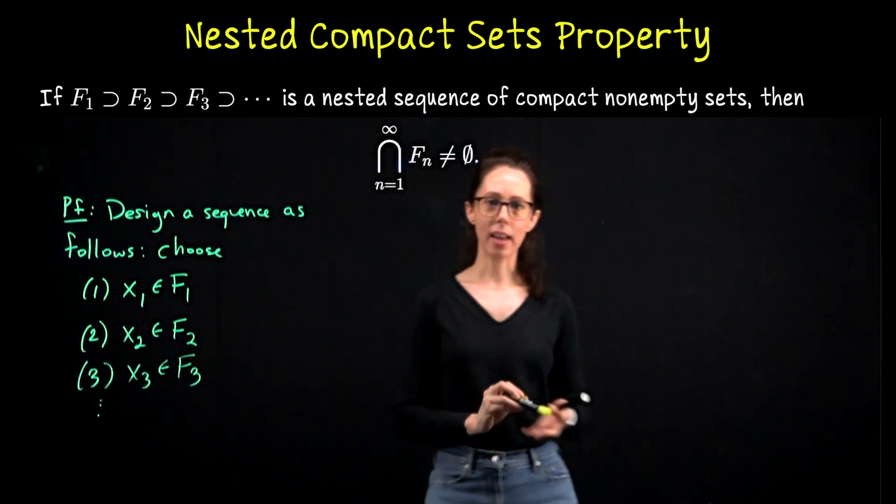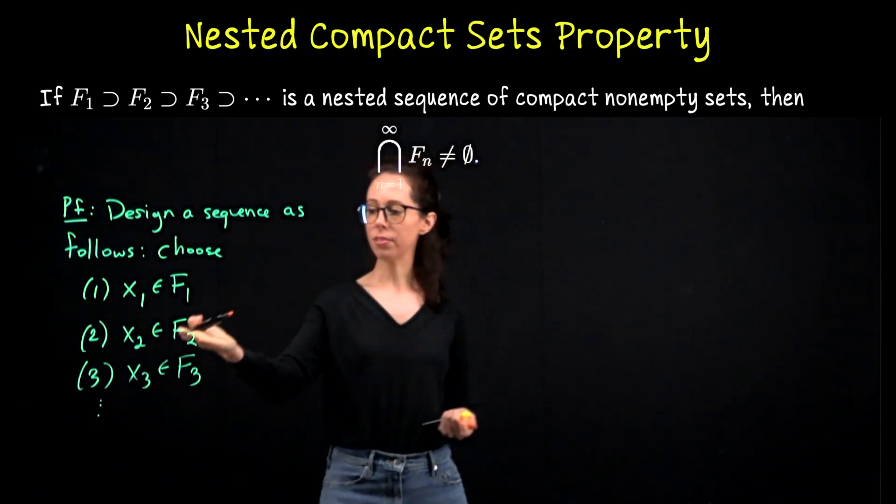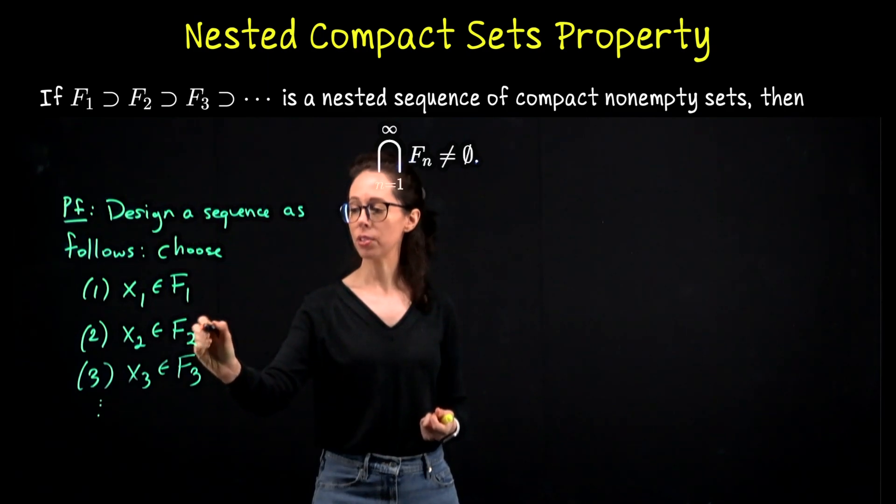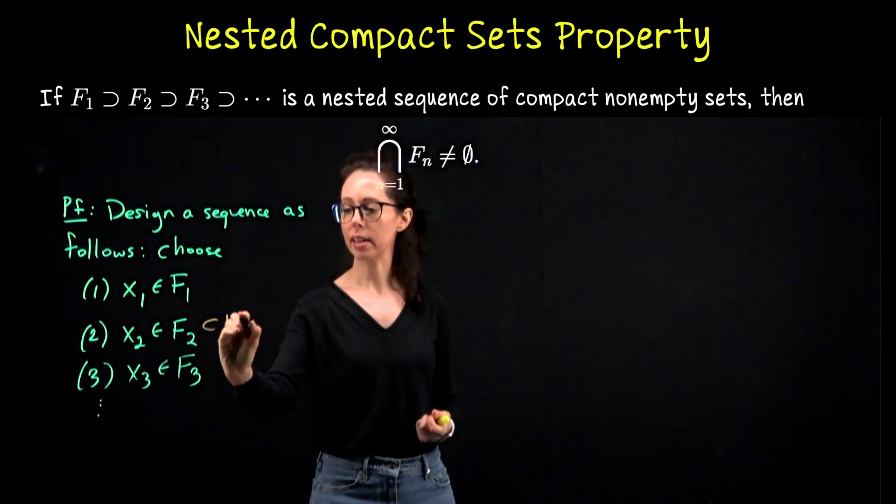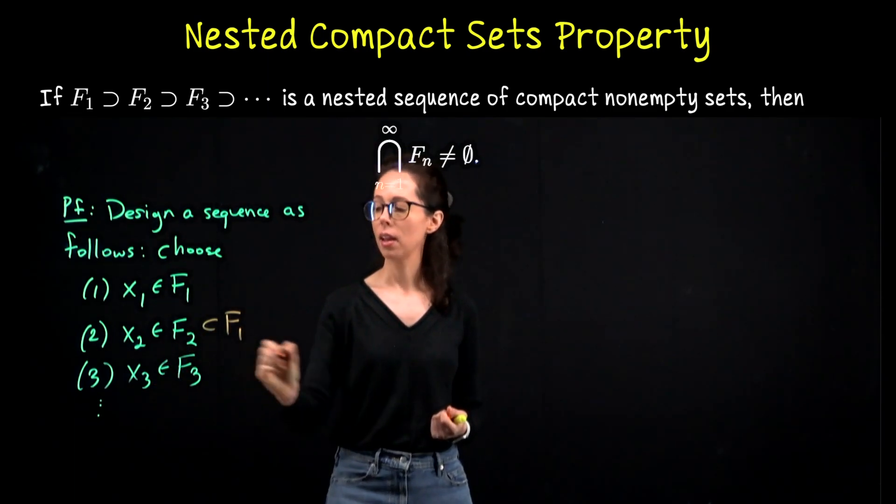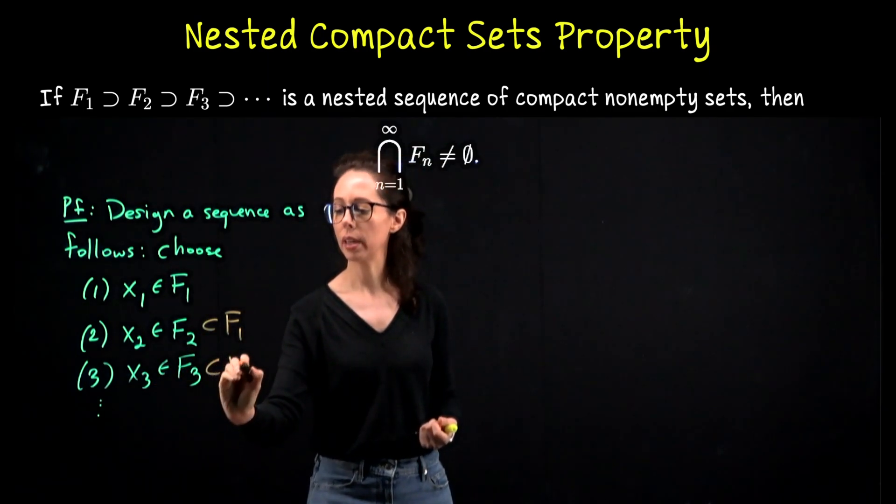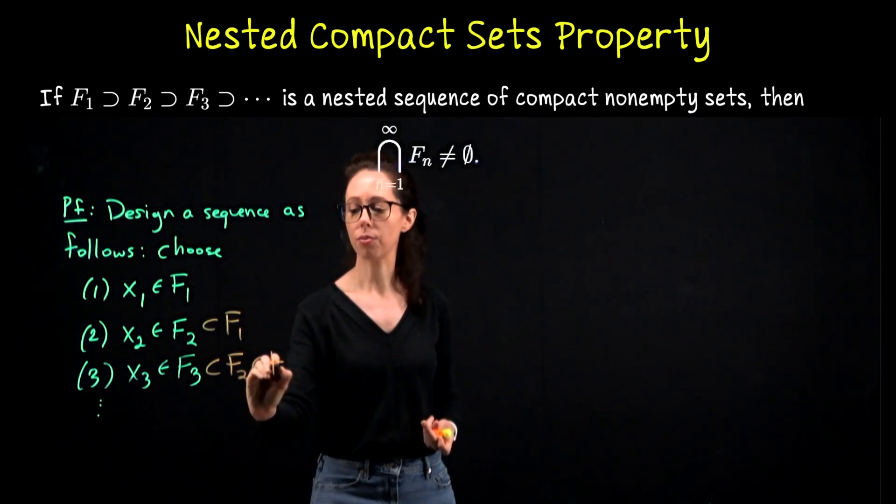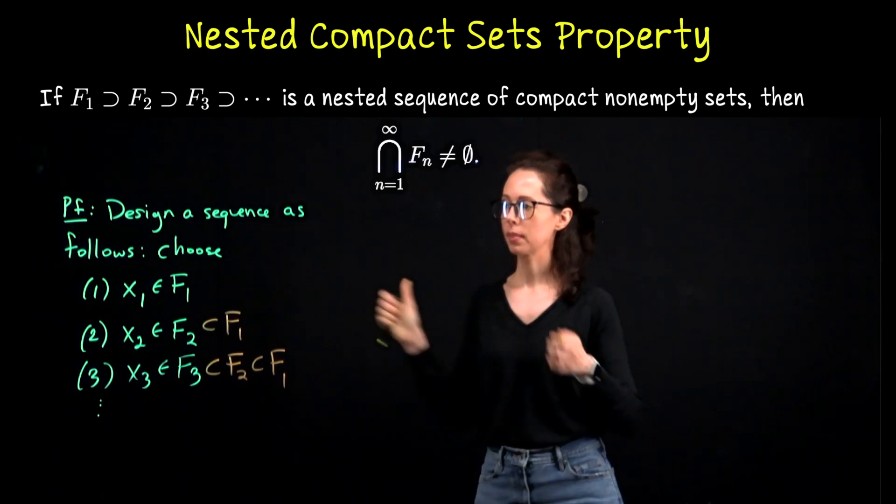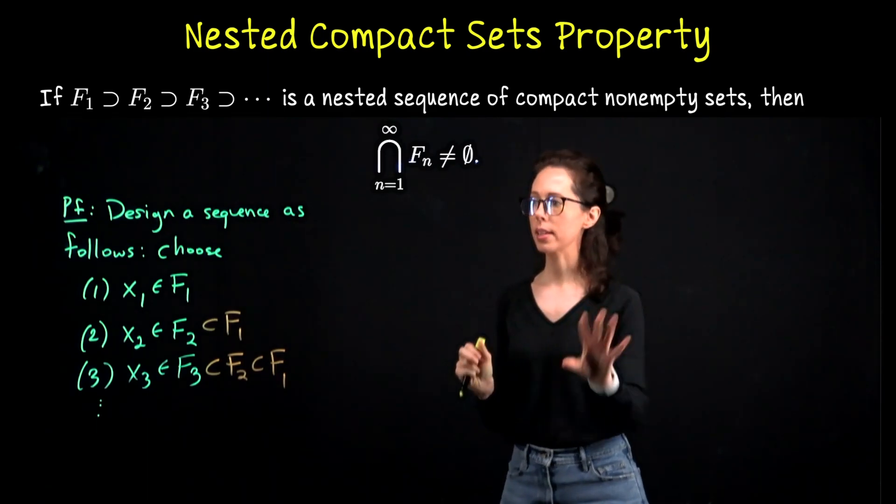What's key to recognize here is that F₂ is a subset of F₁, so x₂ being in F₂ also places it in F₁. And similarly, x₃ has been chosen in F₃, which means it's also in F₂ and also in F₁. We've now created our sequence. Let's move on.